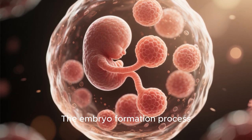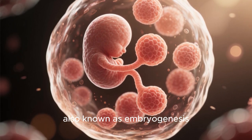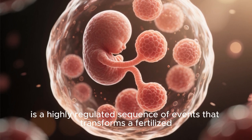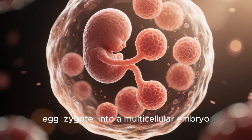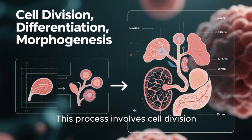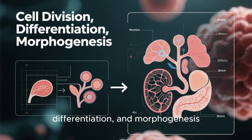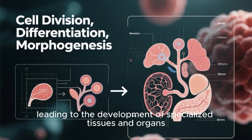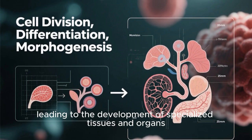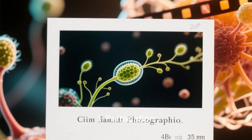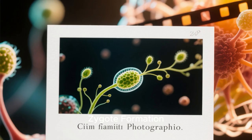The embryo formation process, also known as embryogenesis, is a highly regulated sequence of events that transforms a fertilized egg (zygote) into a multicellular embryo. This process involves cell division, differentiation, and morphogenesis, leading to the development of specialized tissues and organs. Below is a detailed breakdown of the stages.